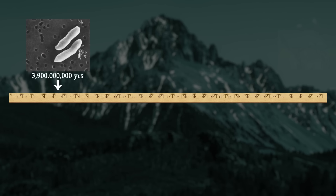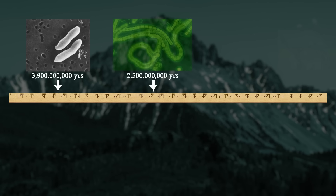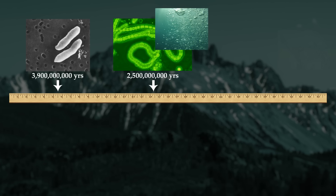The earliest life developed 3.9 billion years ago, or about 5.5 inches from the beginning of the yardstick. 2.5 billion years ago, or about 16.4 inches, cyanobacteria began to flourish. Sometimes called blue-green algae, these microorganisms used photosynthesis to produce much of the free oxygen in the atmosphere that allowed other types of life to develop.